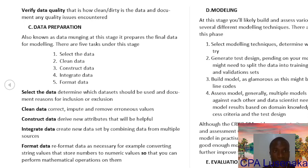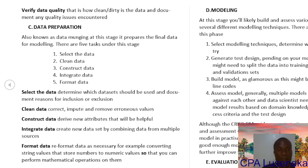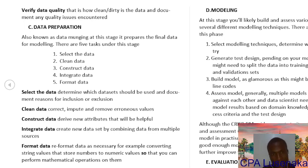After data understanding we come to data preparation, also known as data wrangling. Data preparation is about preparing the final data for modeling. The first task is selecting the data — determining which datasets will be used — and you are required to document reasons for inclusion or exclusion. Then you clean the data by correcting, imputing, and removing erroneous values and duplicates. Data cleaning is a whole subtopic we will cover on this channel.